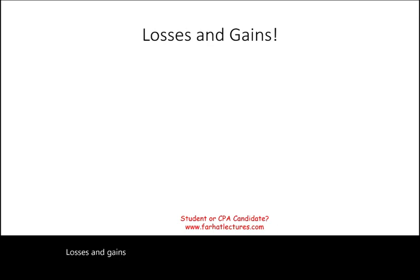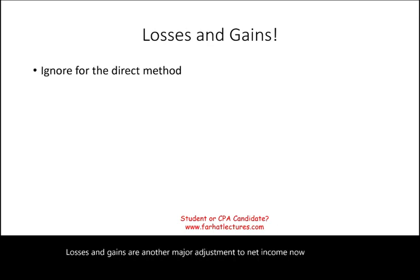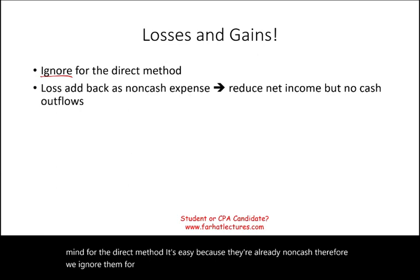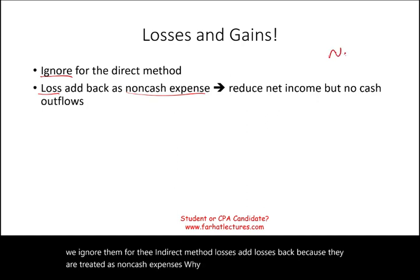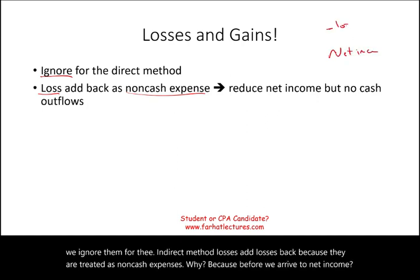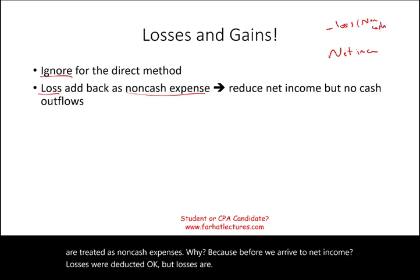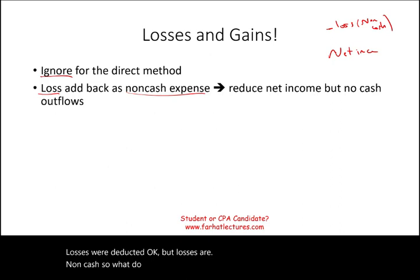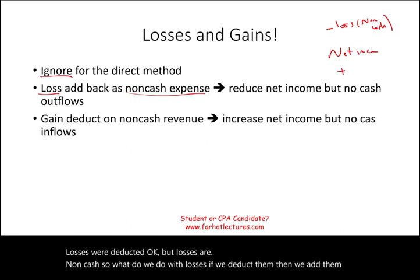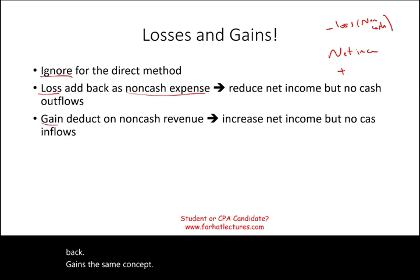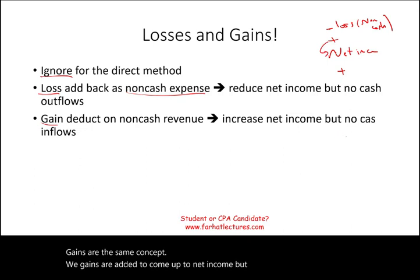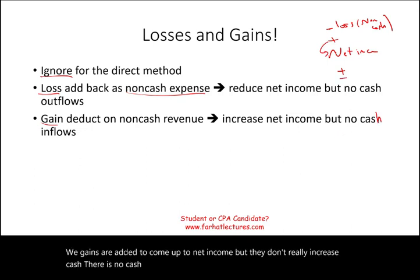Losses and gains are another major adjustment to net income. For the direct method, they're already non-cash, so we ignore them. For the indirect method, we add losses back because they are treated as non-cash expenses — before arriving at net income, losses were deducted, but losses are non-cash, so we add them back. For gains, the same concept applies in reverse: gains were added to arrive at net income but don't really increase cash, so we deduct them.